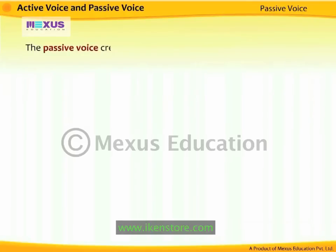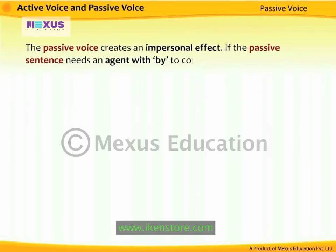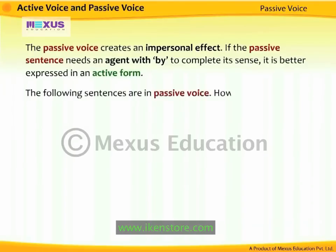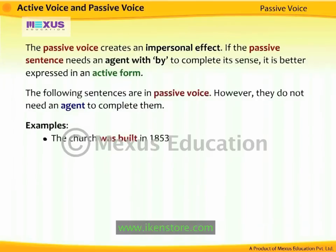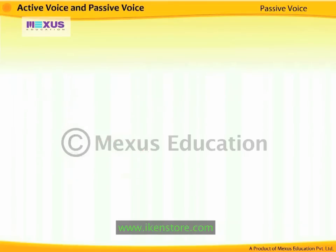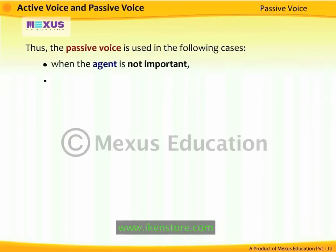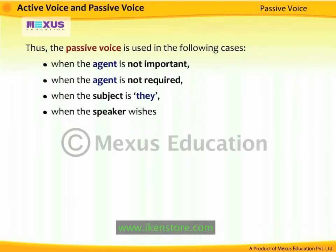The passive voice creates an impersonal effect. If the passive sentence needs an agent with 'by' to complete its sense, it is better expressed in an active form. Some sentences in passive voice do not need an agent — for example, 'The church was built in 1853,' 'The cheater was caught,' and 'Was the news aired?' The agents in these examples are not important. Thus, the passive voice is used when the agent is not important, not required, when the subject is 'they,' when the speaker wishes to remain neutral, or when there is a need for confidentiality.